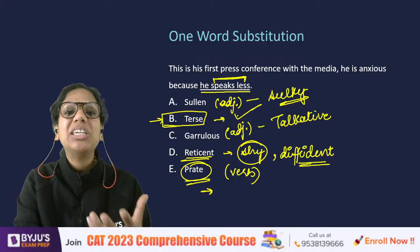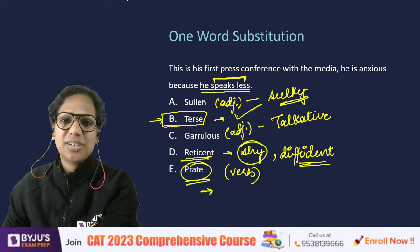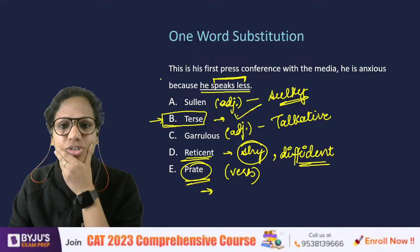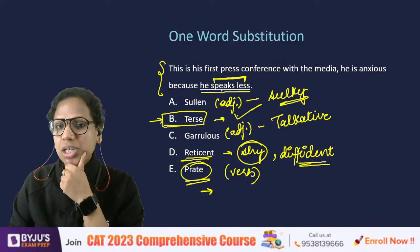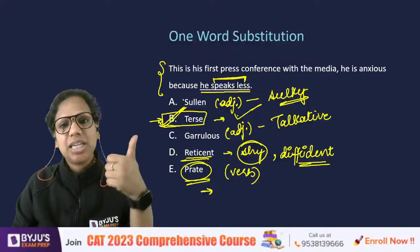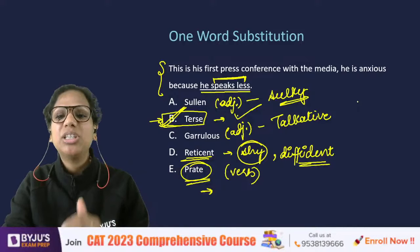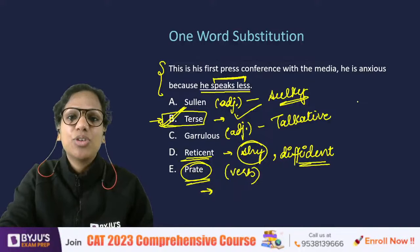Looking at the context — 'this is his first press conference with the media; he is anxious because he speaks less' — even with context, B (terse) is still the answer. He is anxious because he does not speak a lot. That's why he might be perceived as sullen or standoffish.